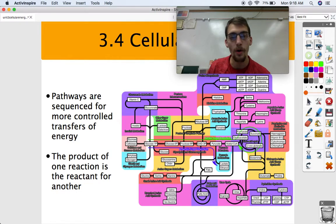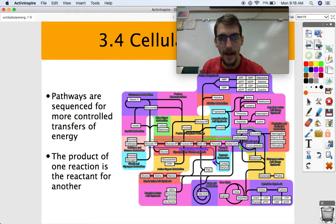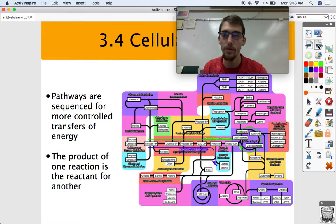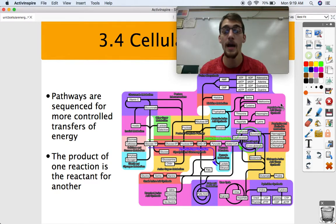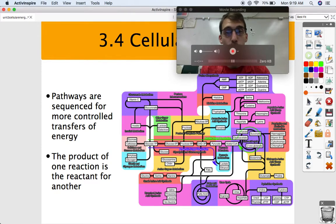So pathways are sequenced for more controlled transfers of energy. And the product of one reaction is the reactant for another, just like we were looking at before when we were discussing metabolic pathways. That's the points I wanted to make for this video. That is it for this topic. Please let me know if you have any questions. We'll see you next time.